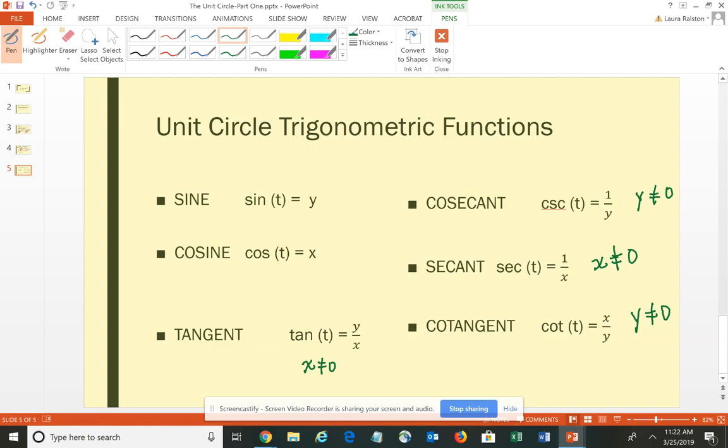So that gives us our six basic trigonometric functions in terms of an ordered pair or in terms of real numbers. Now we're going to look at some special angles on the unit circle in the next video.